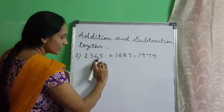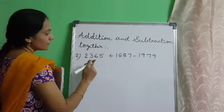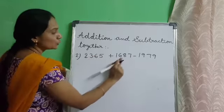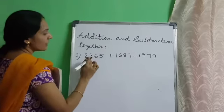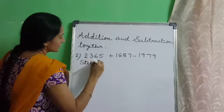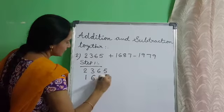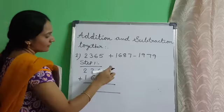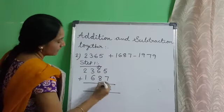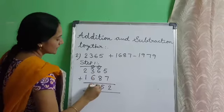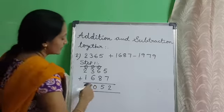First, we will add the first two numbers, and then subtract the third number from the sum of the first two numbers. Step 1: add 2365 plus 1687. 5 plus 7 is 12, 1 is carryover. 6 plus 1 is 7, 7 plus 8 is 15, carry 1. 3 plus 1 is 4, 4 plus 6 is 10, carry 1. 1 plus 2 is 3, 3 plus 1 is 4. By adding, we get the answer 4052.